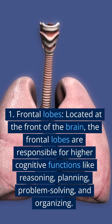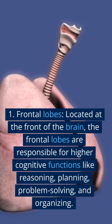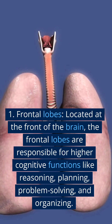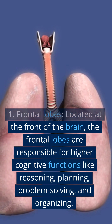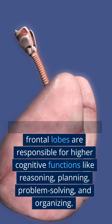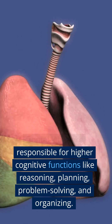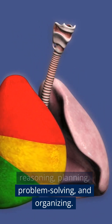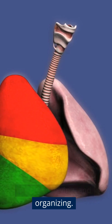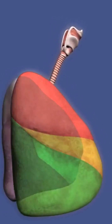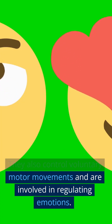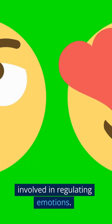Frontal Lobes: Located at the front of the brain, the frontal lobes are responsible for higher cognitive functions like reasoning, planning, problem-solving, and organizing. They also control voluntary motor movements and are involved in regulating emotions.